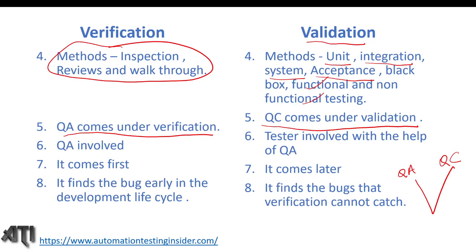In validation we have unit, integration, system, and acceptance — all four levels of testing. In validation we follow all levels of testing as well as all functional and non-functional testing. QA comes under verification and QC comes under validation.